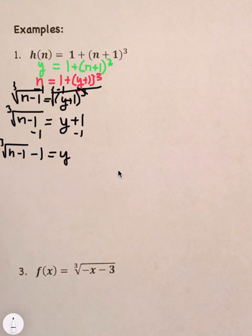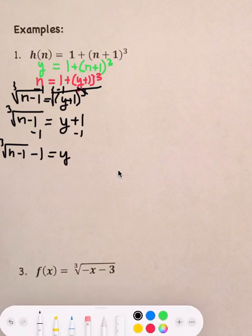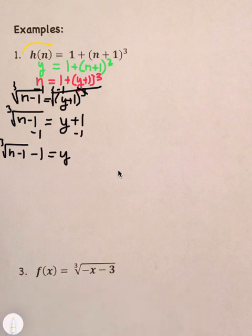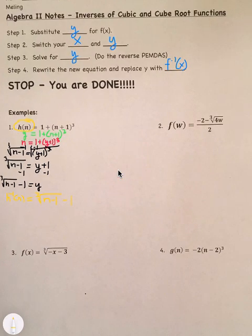And then our final step is to rewrite it as an inverse function. So, normally we say f inverse of x, but for the last step because we have h of n it becomes h inverse of n is equal to the cube root of n minus 1 minus 1. That's your final answer. So, you can kind of look at it all there. All right.